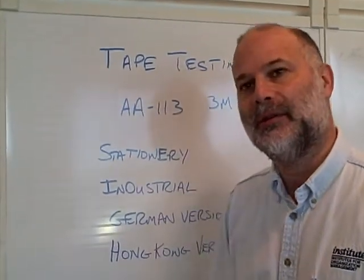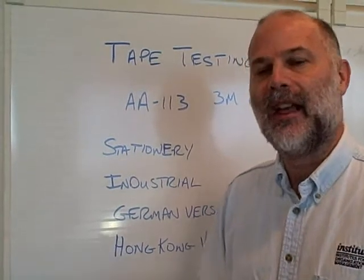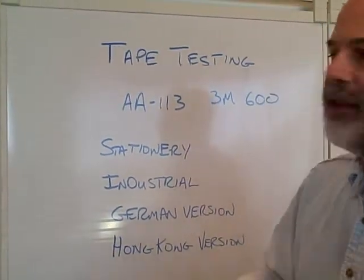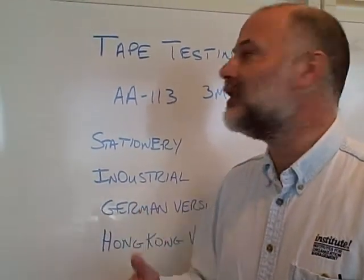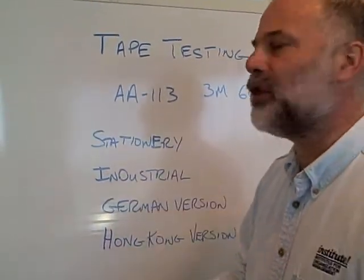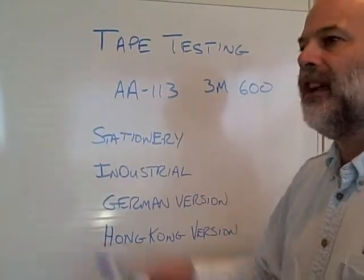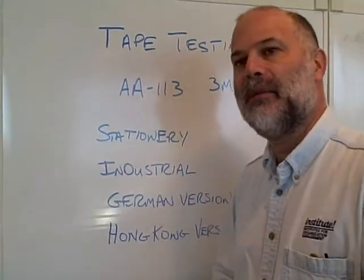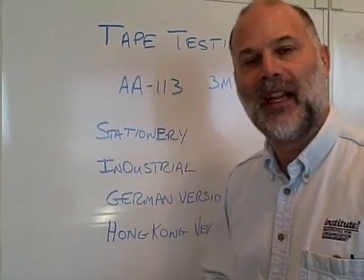primarily used to evaluate adhesion of coatings and solder masks and such. In IPC specifications for some time, we had listed a certain type of tape, a commercial item description specification AA113, which people had trouble finding. So we called out 3M Scotch brand 600.